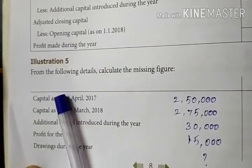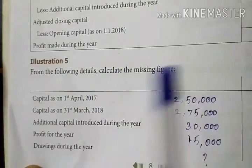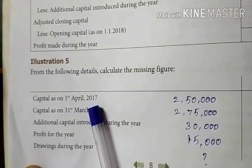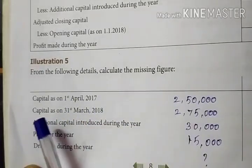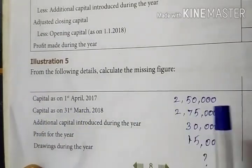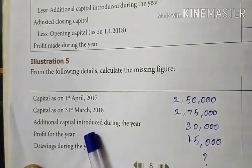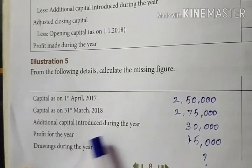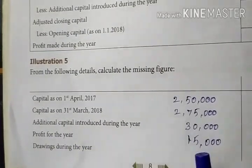Next method: from the following details, calculate the missing figure. Capital as on 1st April — meaning opening capital — is 2,50,000. Capital as on 31st March 2018, that is closing capital, is 2,75,000. Additional capital introduced: 30,000. Profit for the year: 15,000. Drawings: question mark. What is the missing information? Drawings.